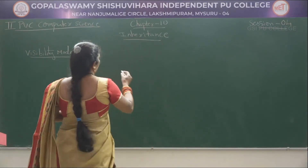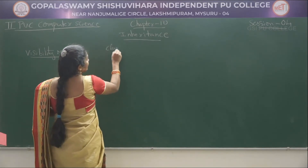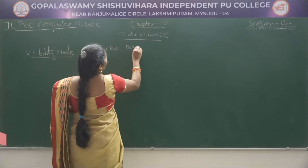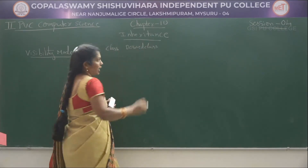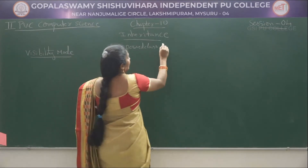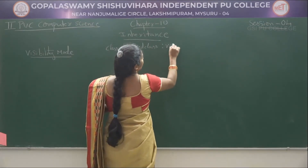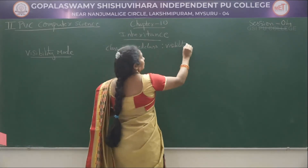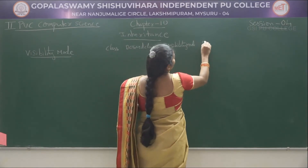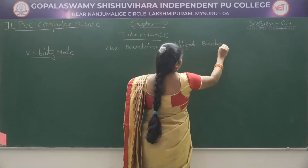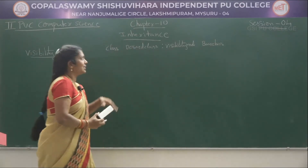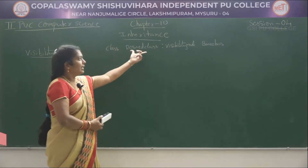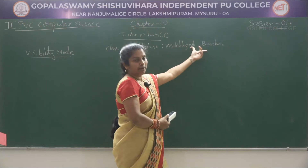While defining inheritance, we first write the keyword class, then the derived class name, then a colon, then the visibility mode, and then the base class name. This is the pattern to define inheritance: class, derived class, colon, visibility mode, base class.